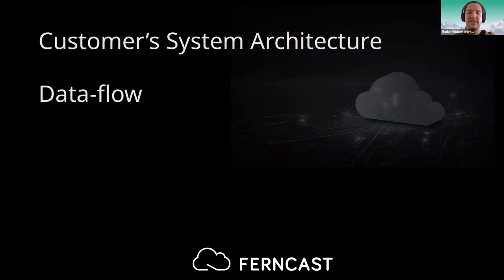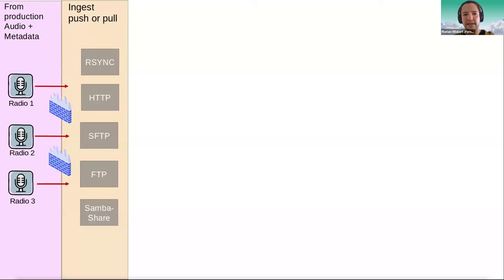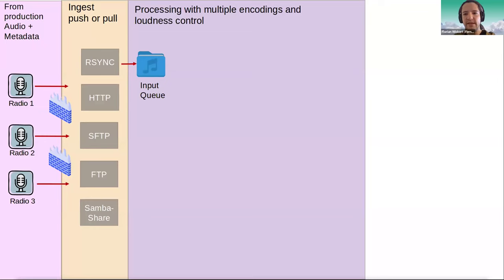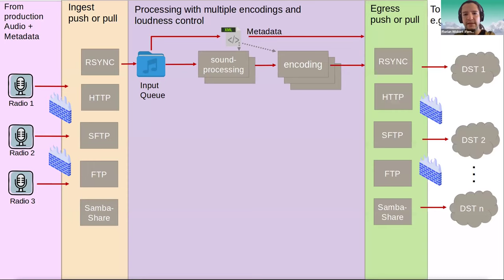Looking at the data flow: the production system sends audio and metadata files into Xtreme, pushed using SFTP. The orchestrator inside Xtreme adds these files combined as a new job to the input queue. Once it's the job's turn, the metadata file is inspected, and based on that, the pipe processing starts — which can include sound preprocessing like loudness, and of course the encoding. At the end, the transport is selected — SFTP, HTTP, FTP, or Samba — and uploaded to destinations determined by the metadata.